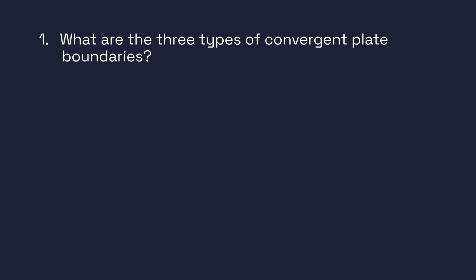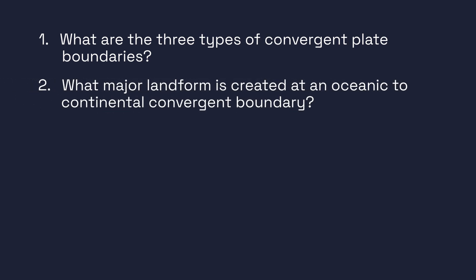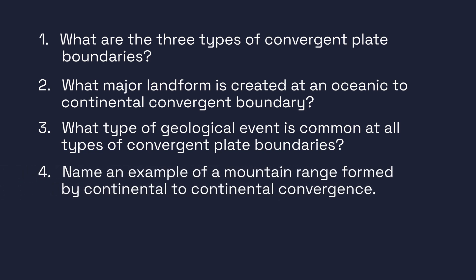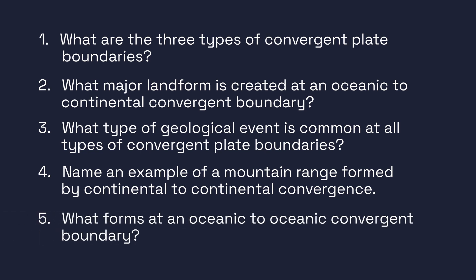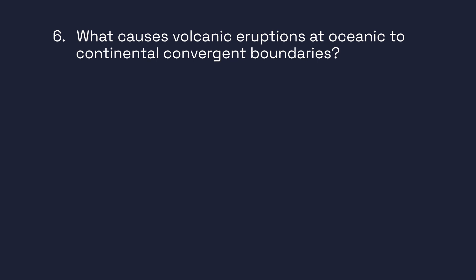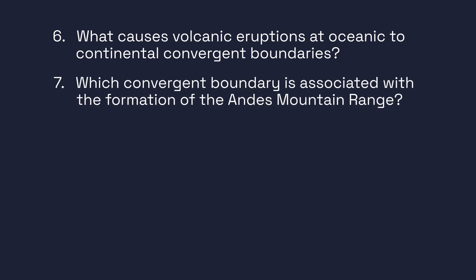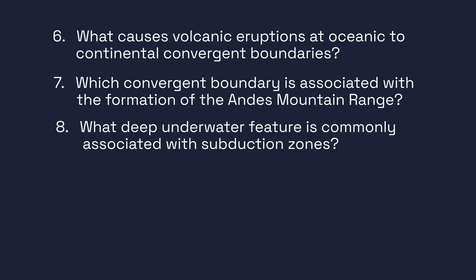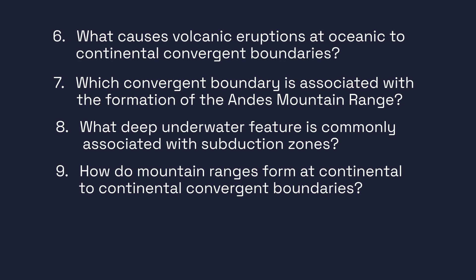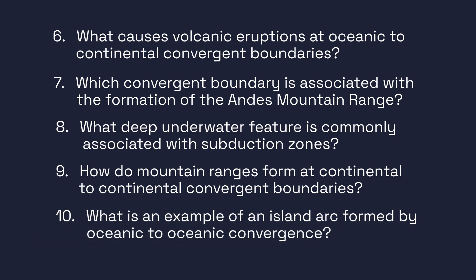To assess your learning, please answer the following questions: What are the three types of convergent plate boundaries? What major landform is created at an oceanic-to-continental convergent boundary? What type of geological event is common at all types of convergent plate boundaries? Name an example of a mountain range formed by continental-to-continental convergence. What forms at an oceanic-to-oceanic convergent boundary? What causes volcanic eruptions at oceanic-to-continental convergent boundaries? Which convergent boundary is associated with the formation of the Andes mountain range? What deep underwater feature is commonly associated with subduction zones? How do mountain ranges form at continental-to-continental convergent boundaries? What is an example of an island arc formed by oceanic-to-oceanic convergence?